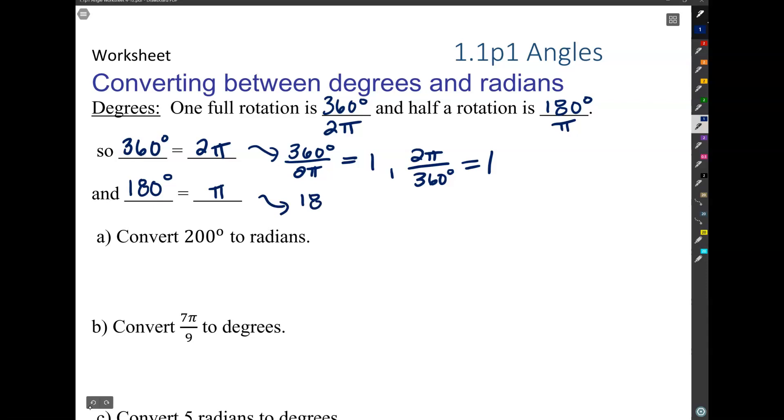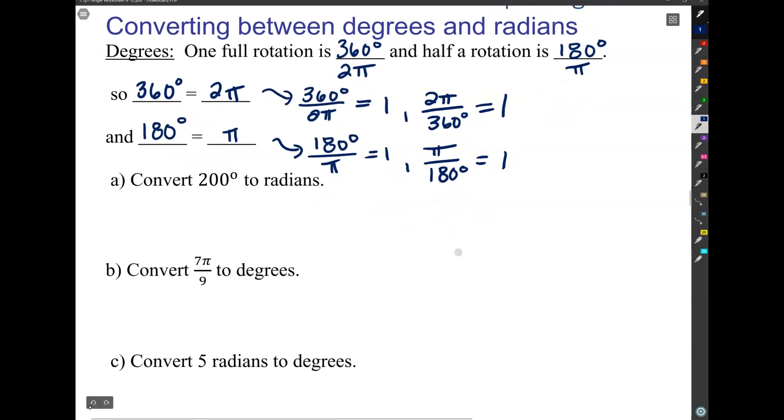And if you want, you can reduce these. It doesn't matter. You don't need to memorize both of these things, but pick one and stick with it. 180 over π is equal to one and π over 180 is equal to one. So this is what's going to allow us to convert back and forth between these fairly easily. And I want you to be able to do that.